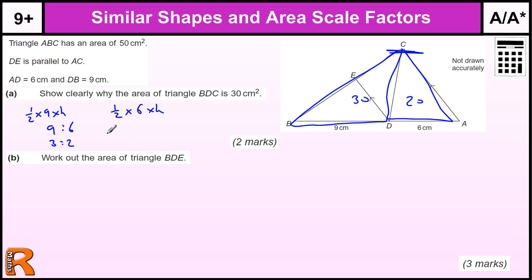So we've got to share the 50 in the ratio of 3 to 2. So we divide by 5 to get 10, and then we do 3 times 10, which gives us 30 centimeters. Now that's not very well written, but that's essentially the reason why.